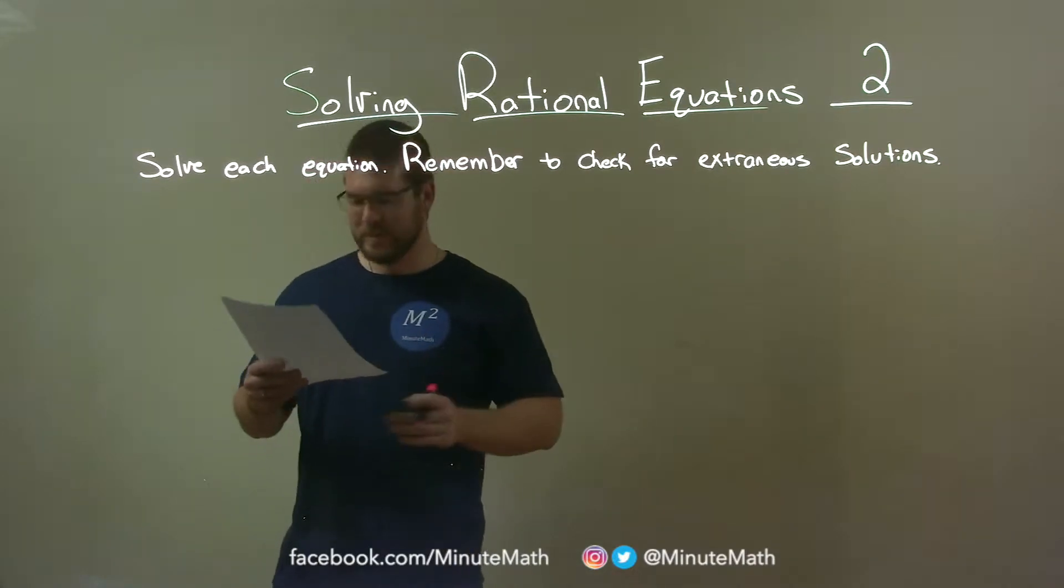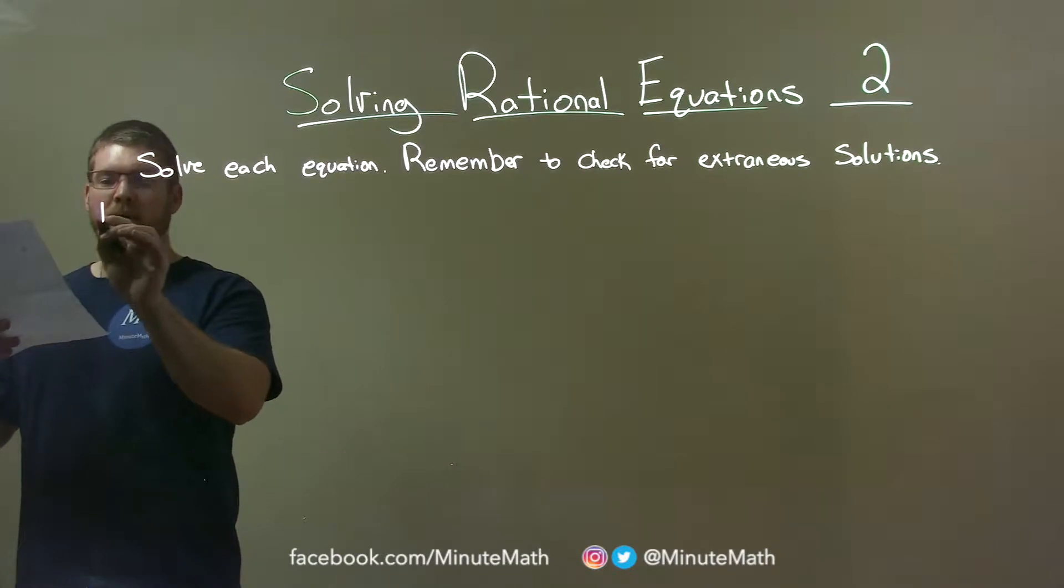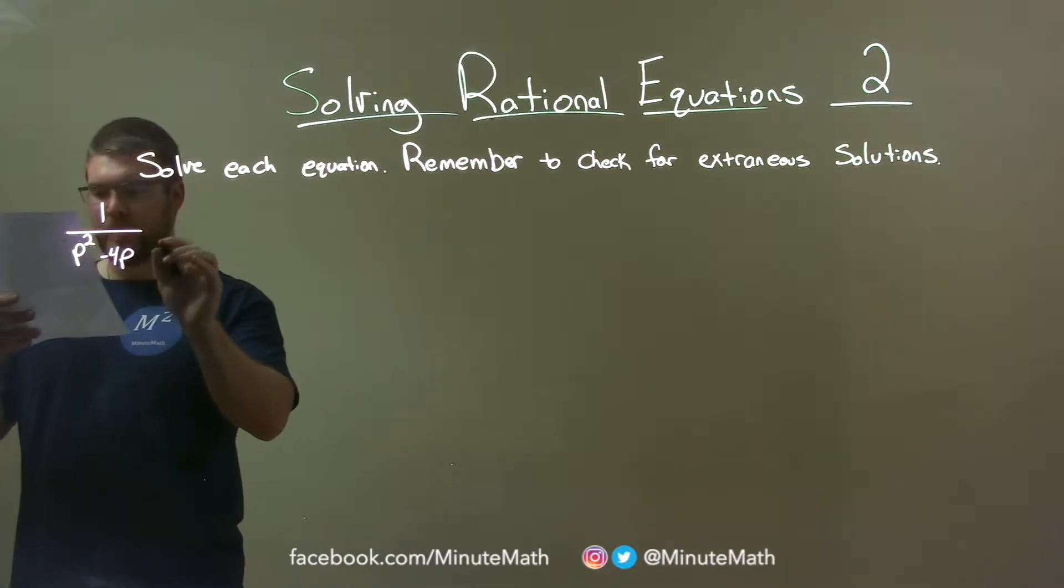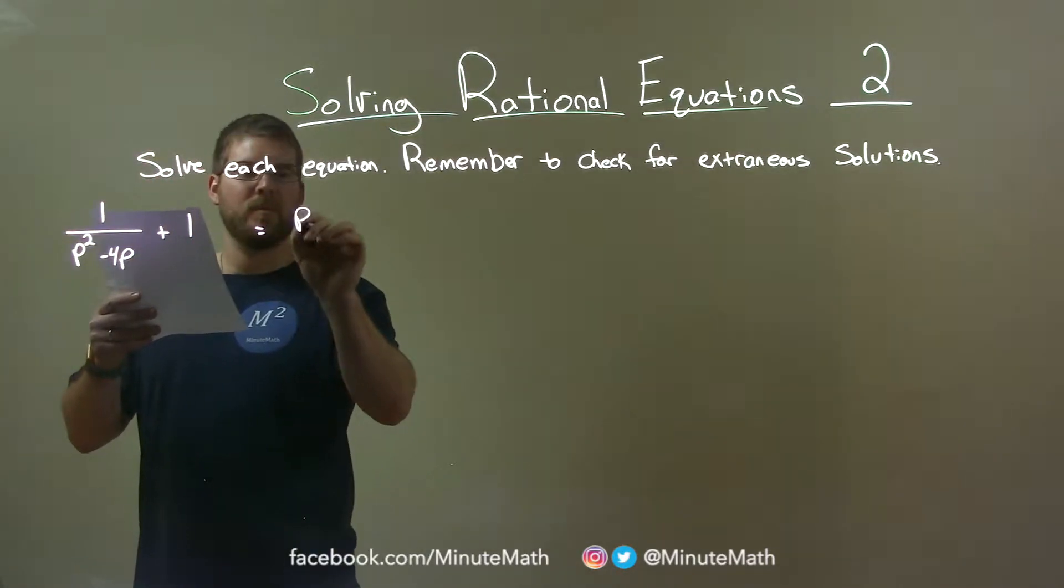We're going to solve each equation and remember to check for extraneous solutions. So if I was given this equation, 1 over p squared minus 4p plus 1 is equal to p minus 6 over p.